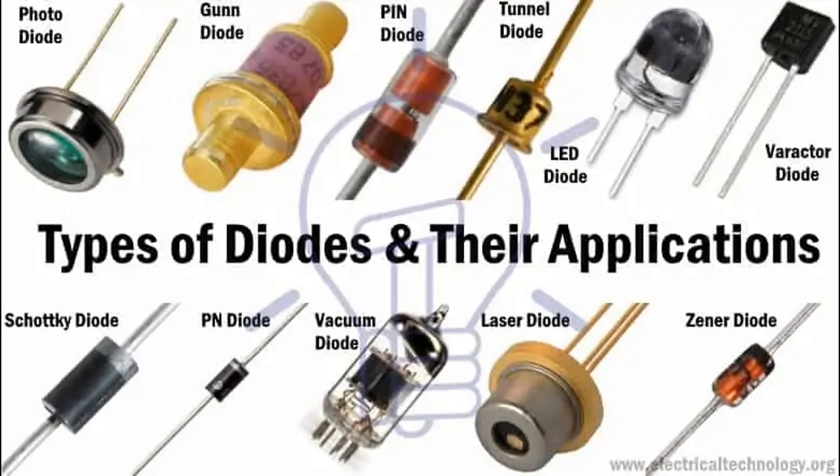Basic structure: diodes are typically made of semiconductor materials with two layers — the P-type (positively doped) and N-type (negatively doped) semiconductor materials. The junction between these P-type and N-type materials forms a P-N junction, which is the basic structure of a diode. Symbol and terminals: the symbol for a diode is an arrow pointing in the direction of conventional current flow. Diodes have two terminals: the anode (positive) and the cathode (negative).